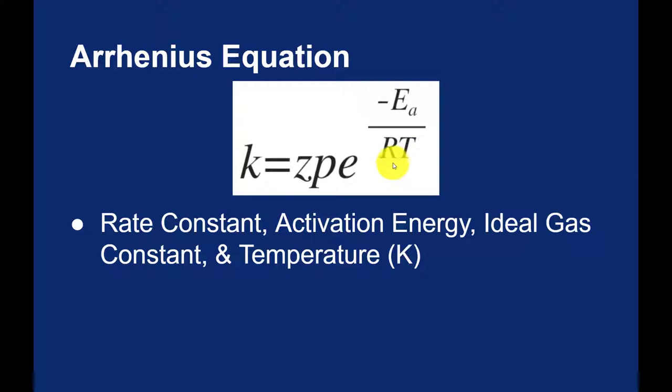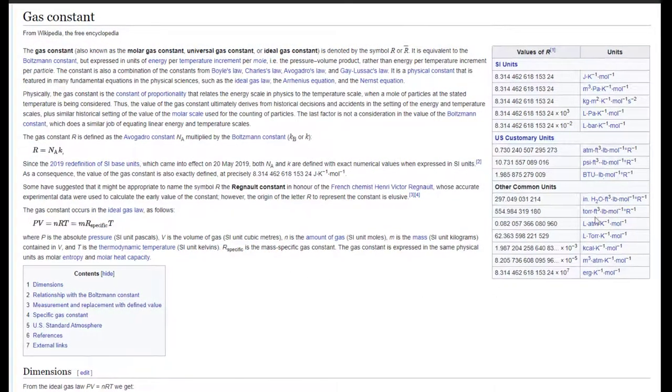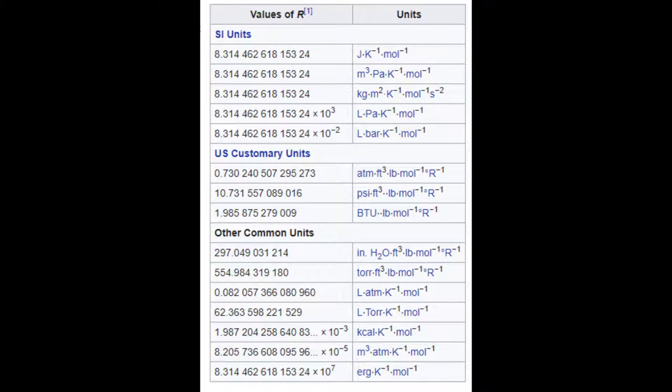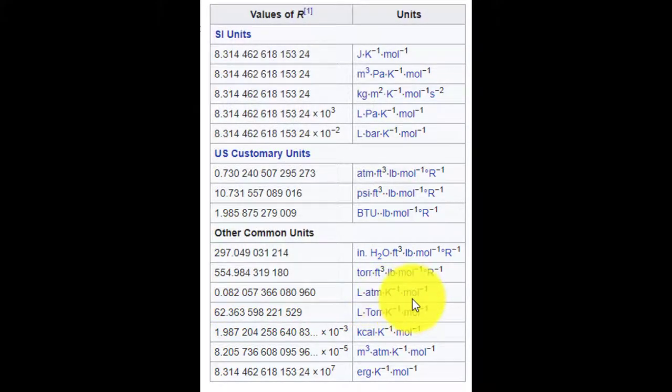And the reason why has to do with the ideal gas constant. If we look up our gas constant, we know that there are different values of the gas constant depending on the units that you use. We often use the value of 0.08206 liters times atmospheres over Kelvin times moles. But when talking about energy, it's much better to use 8.314 joules per Kelvin times mole, because that gives us joules as our unit of energy. But it also means that we have to be in Kelvin.